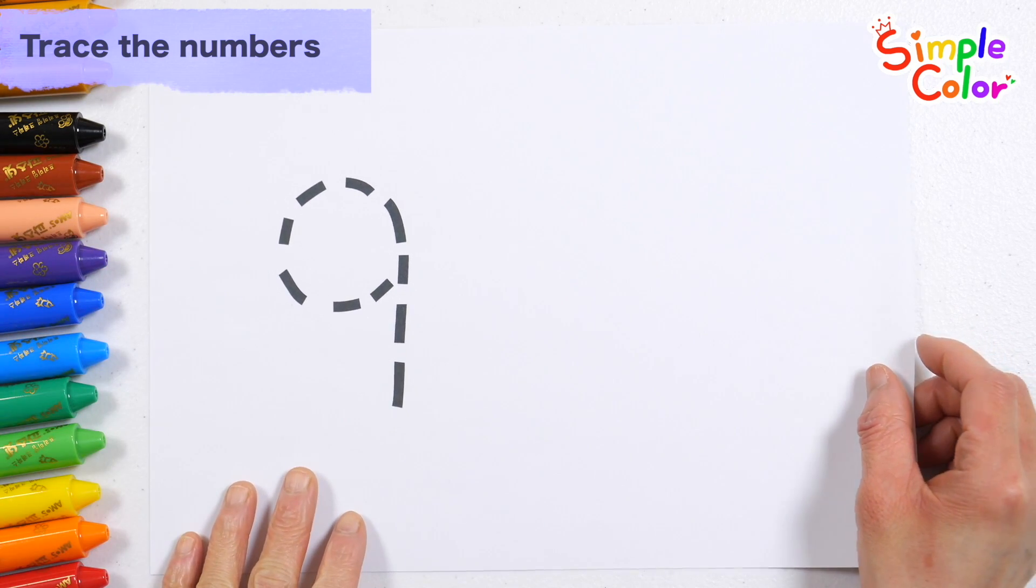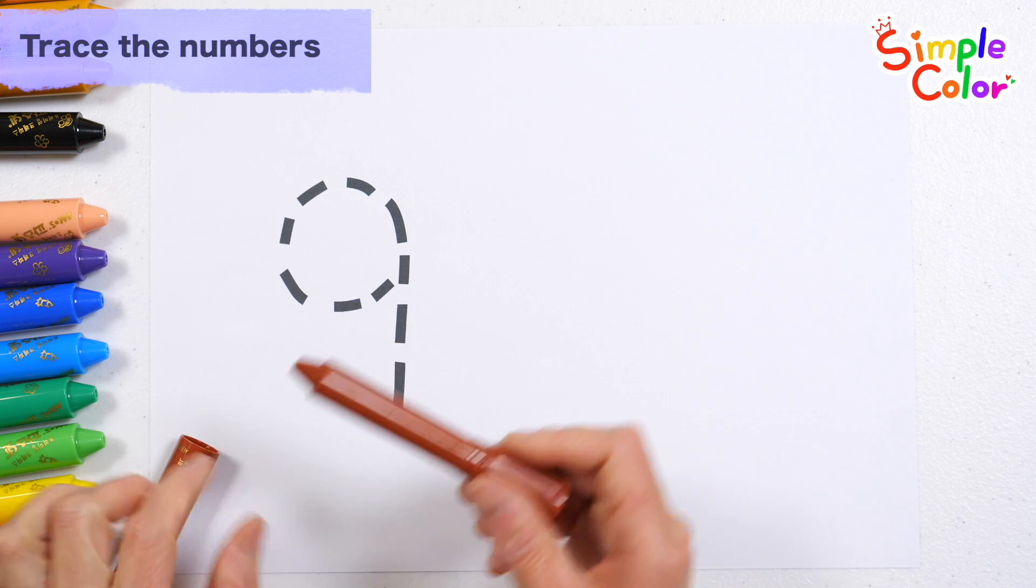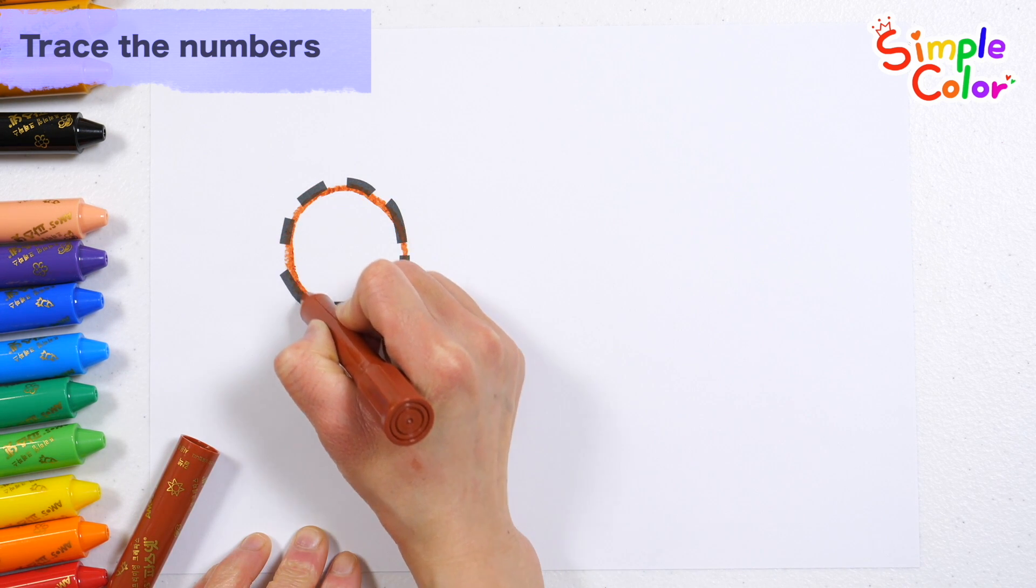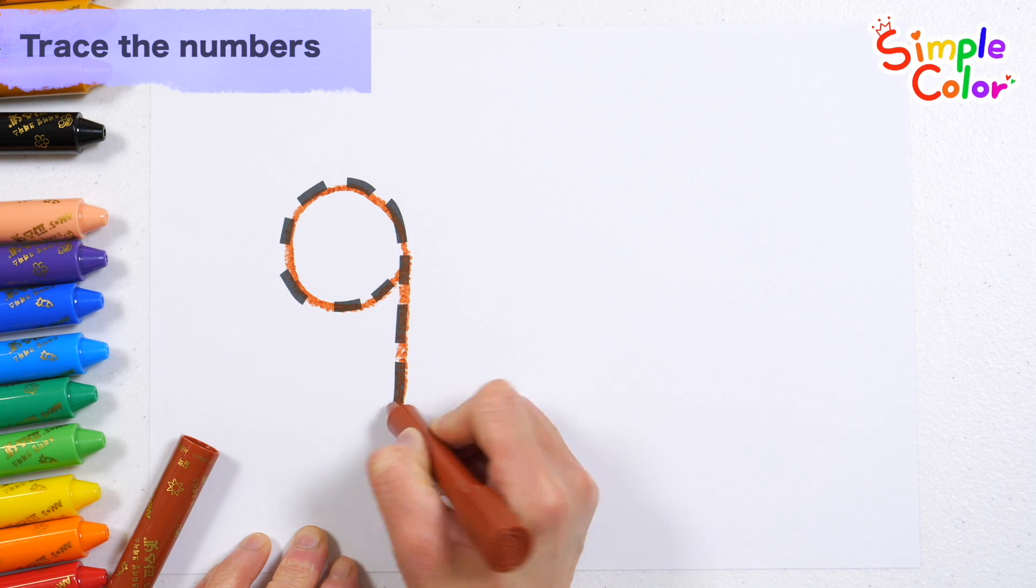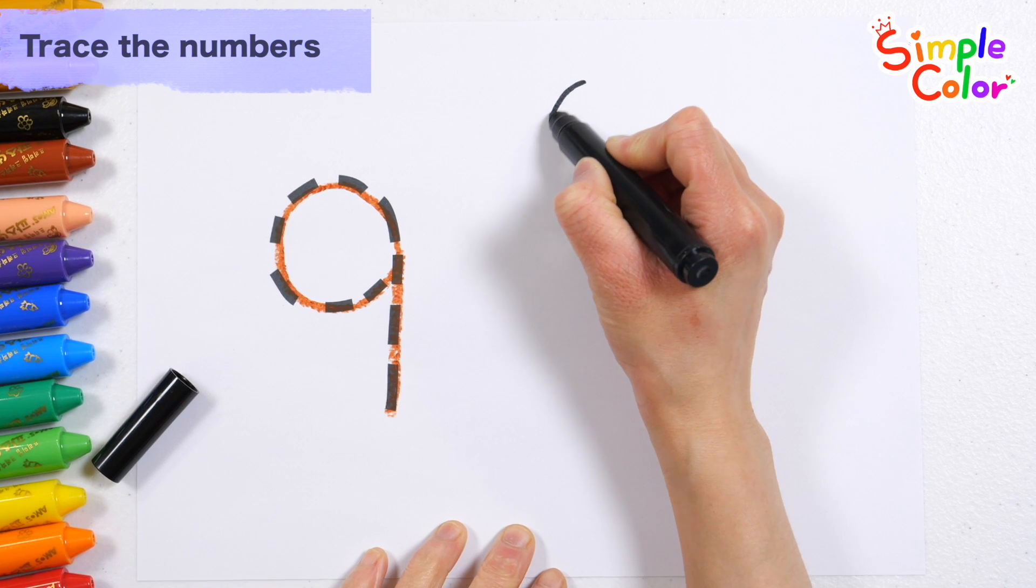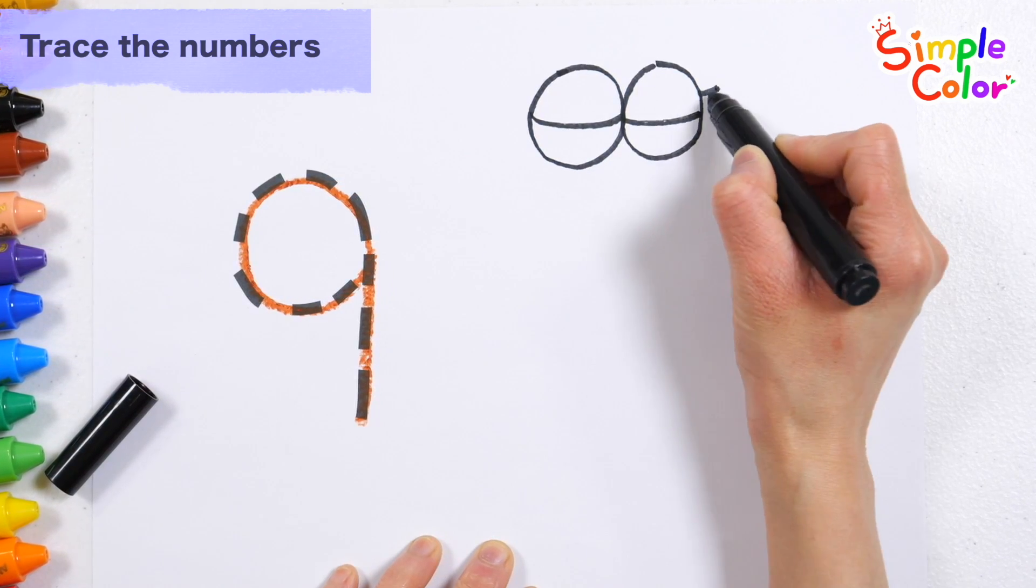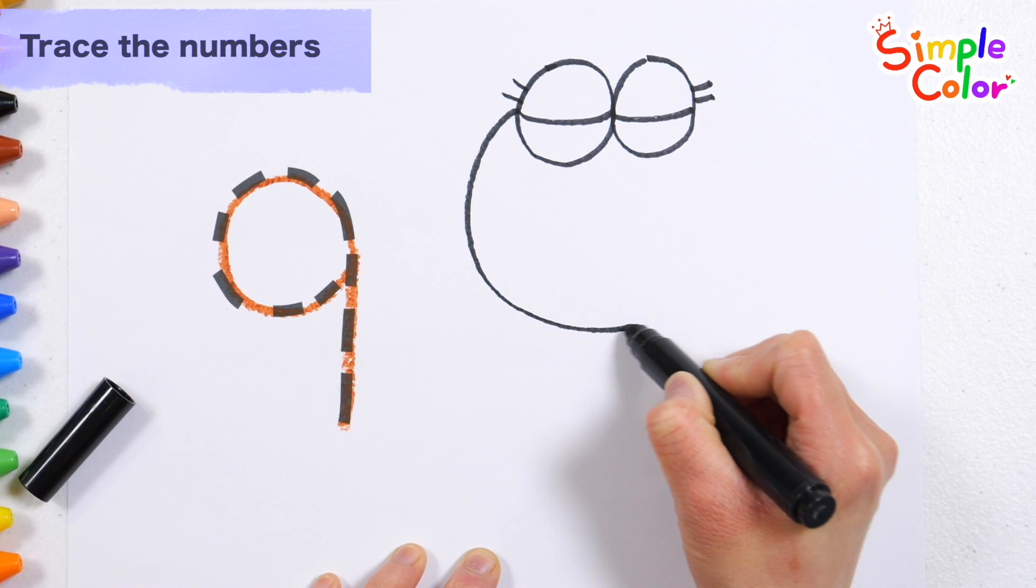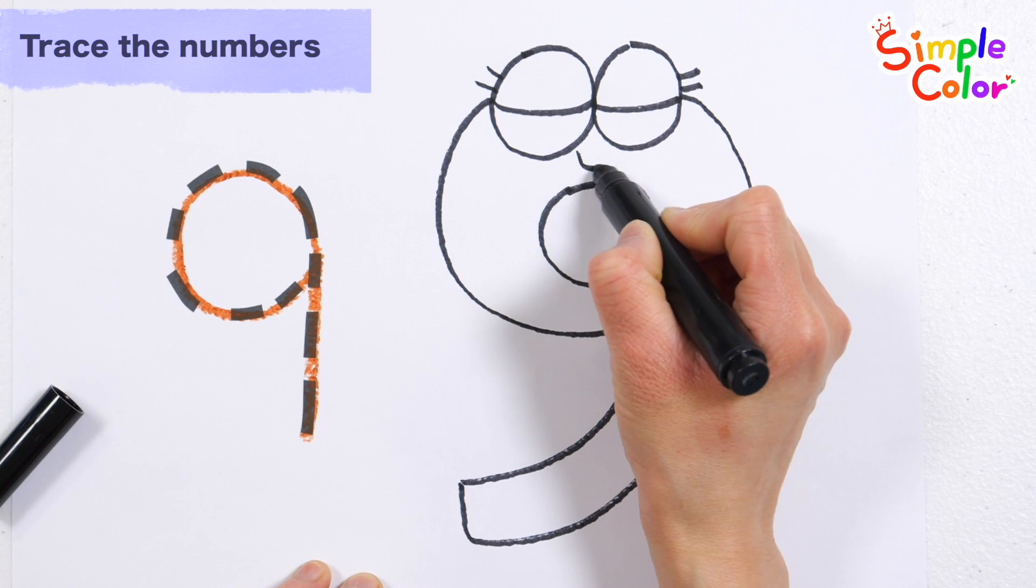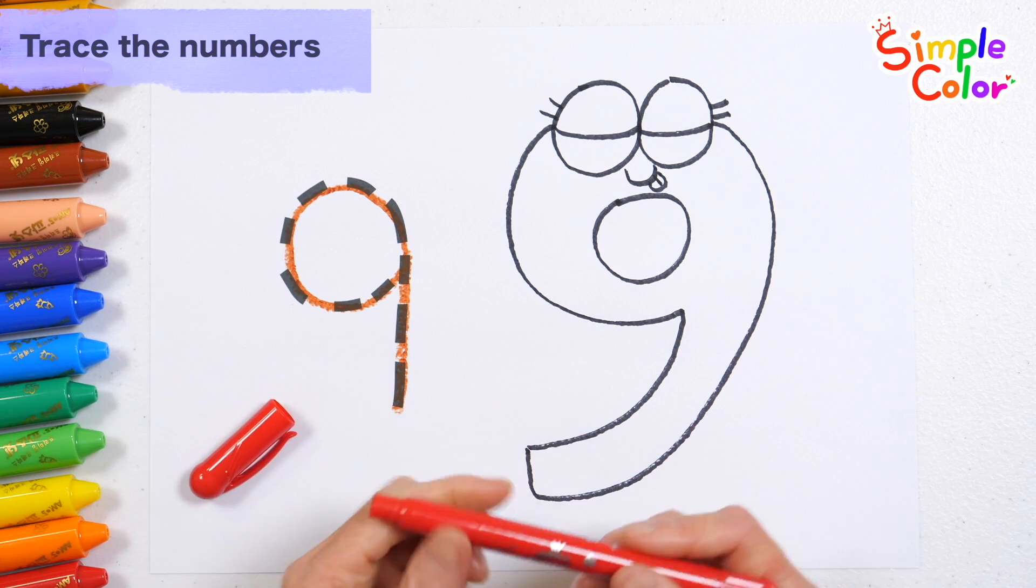Let's write the number 9 along the dotted line. Nine. Let's express numbers in a fun way. Let's color it. Wow!